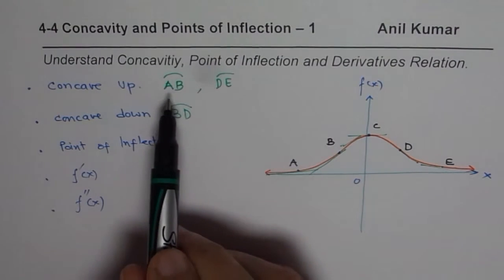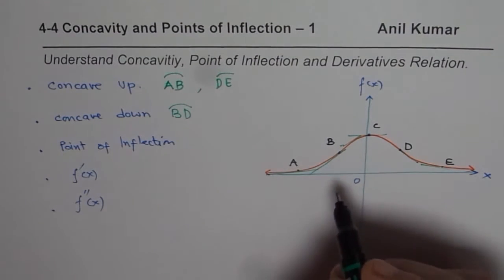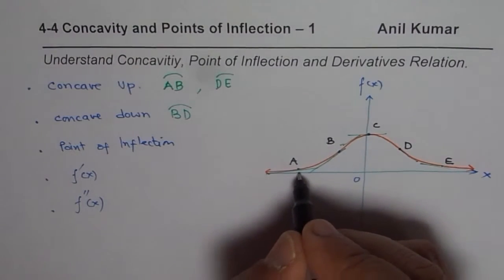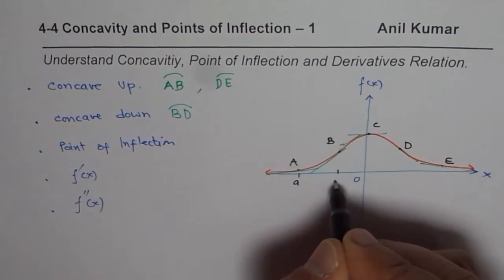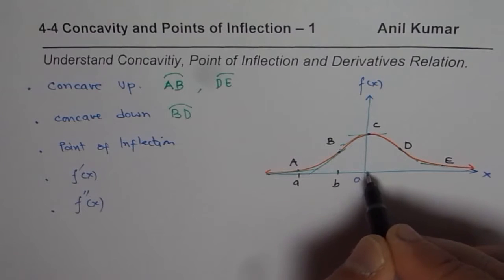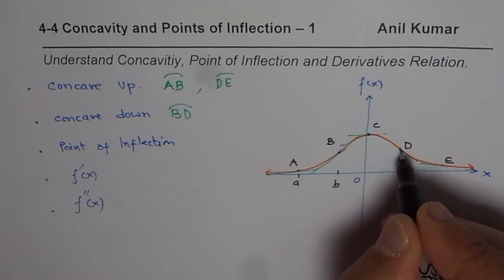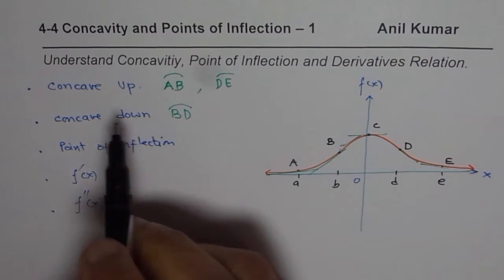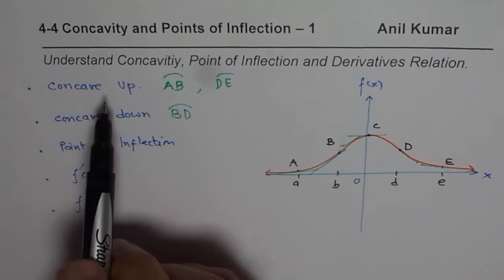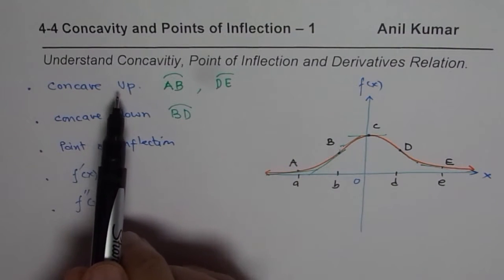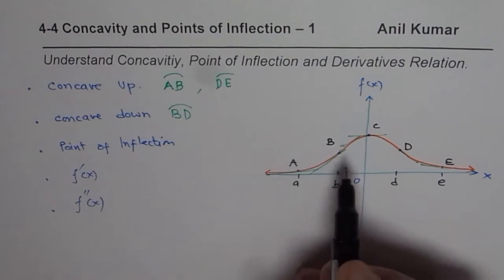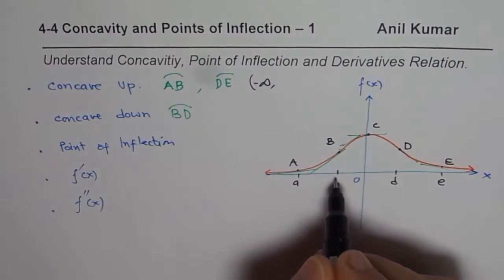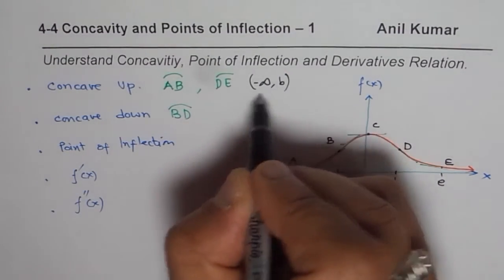Well, this is not the good way of writing, but anyway, what you could do here is, you could write points as x points as a, b. Well, this is good zero, we will use zero. So we will call this as d and this point as e. So you could write interval notation. So we can say it is concave up in the interval from, let us say, minus infinity to b. Minus infinity to b. This is a better way of writing.